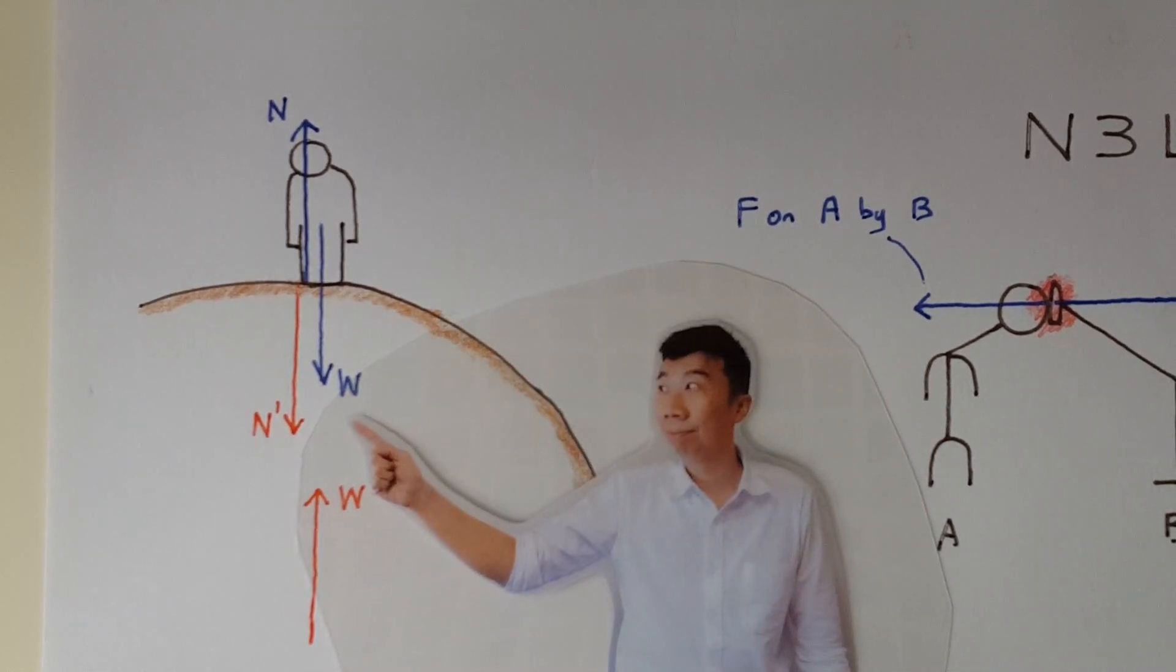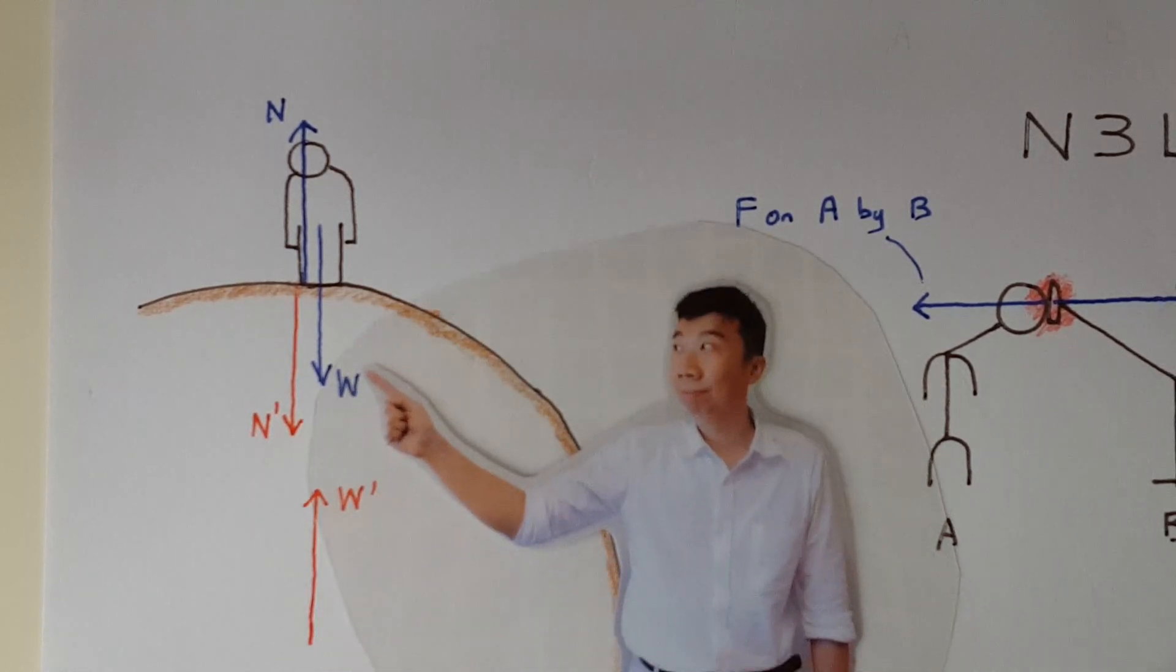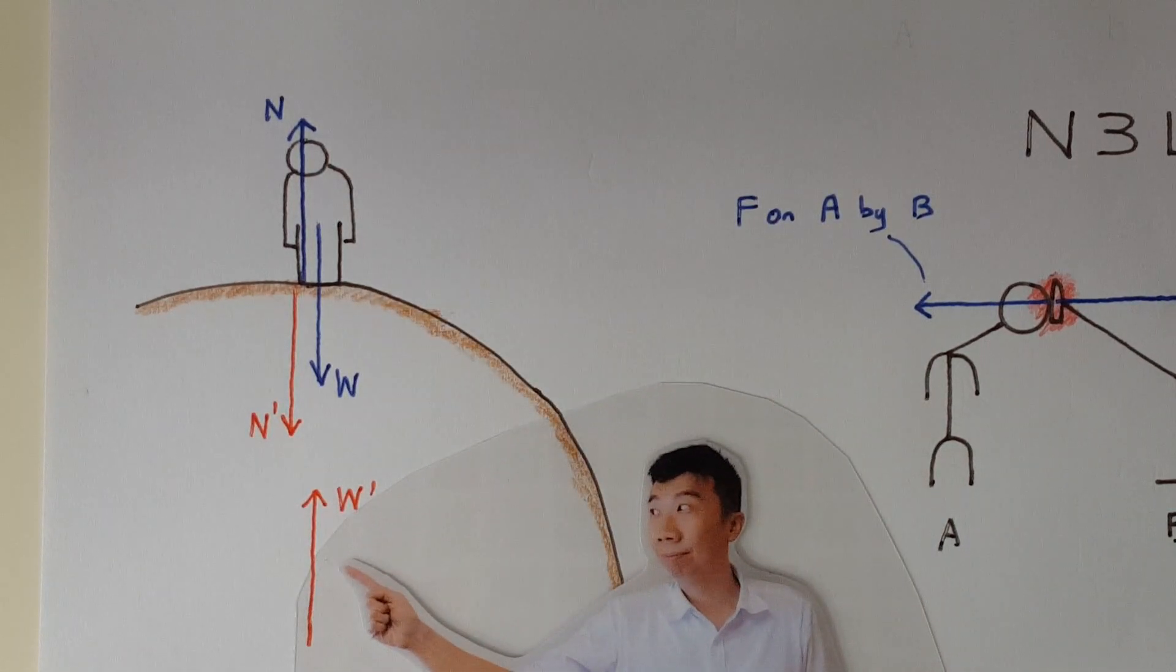That's right. You are pulling the Earth up. These two forces are the mutual gravitational pull between the two masses, which is your mass and the Earth's mass.